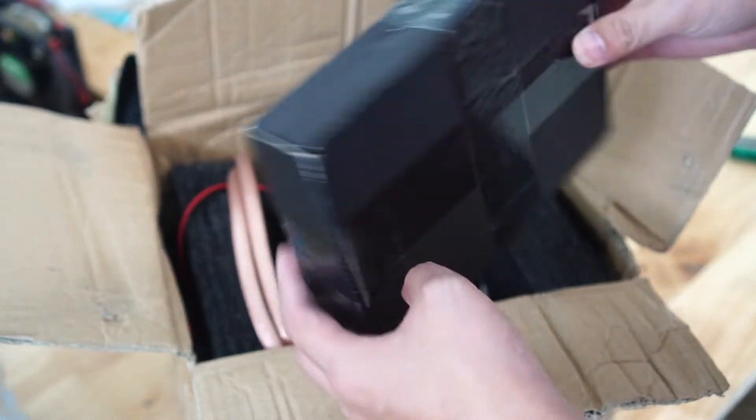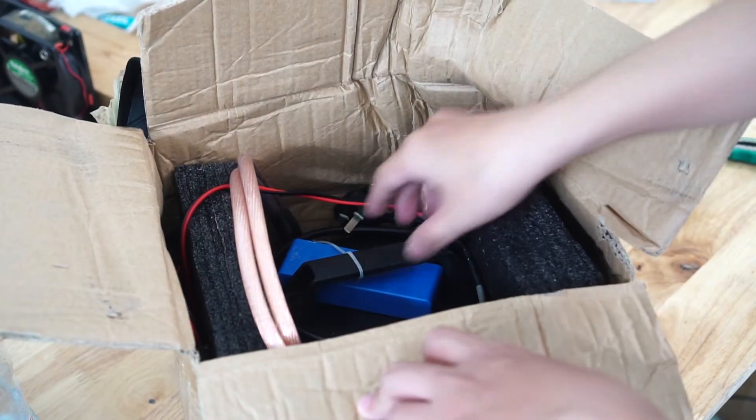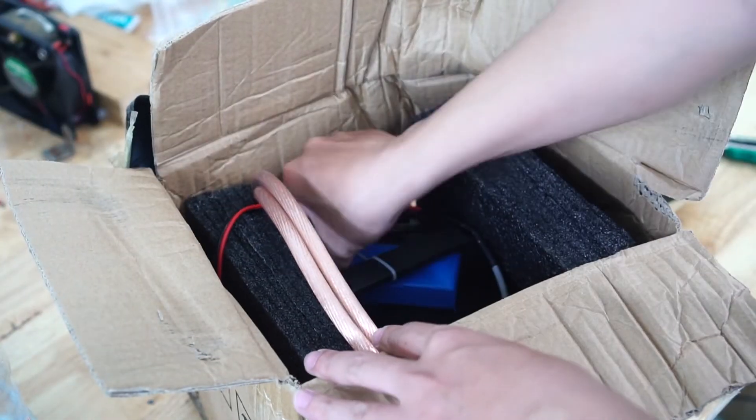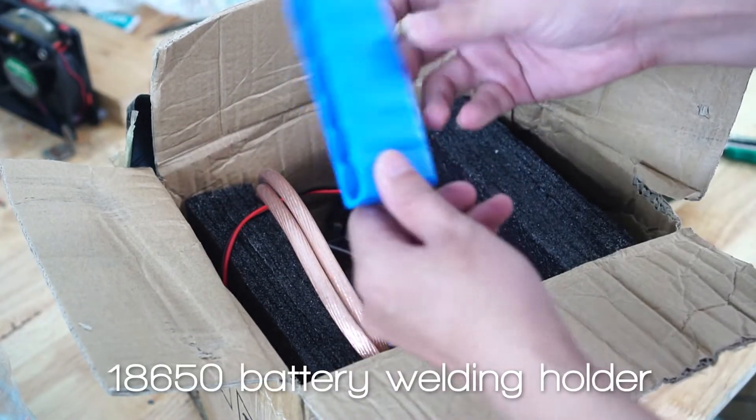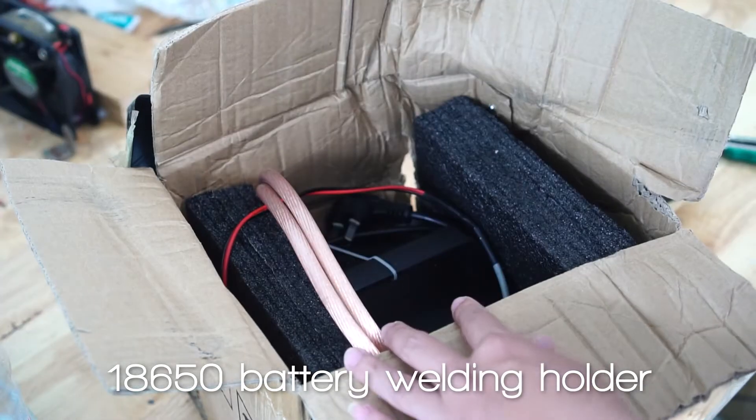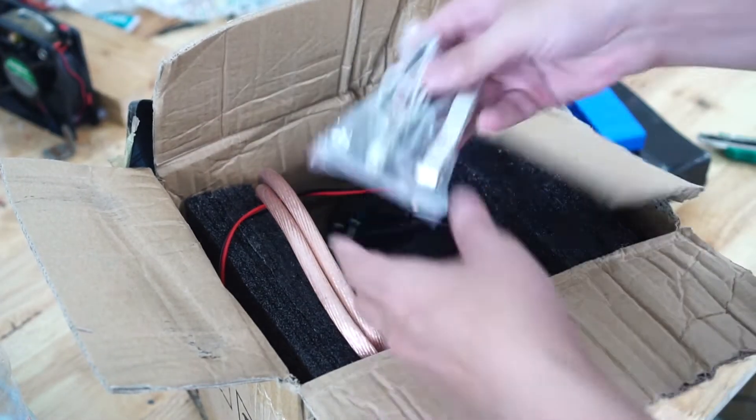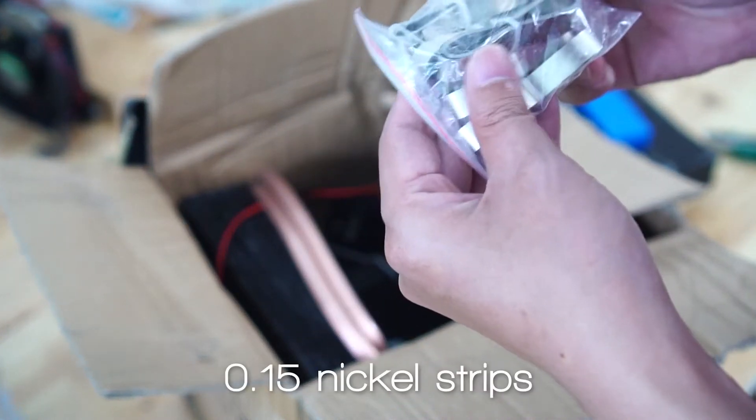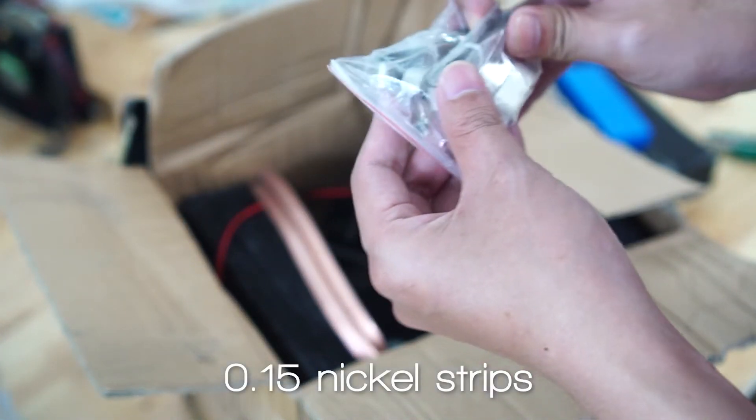It has a handheld spot welding pen, as you mentioned in the next video. This is a 6-cell battery holder for welding, nickel strip, and additional components.